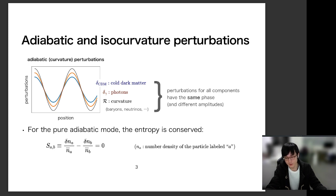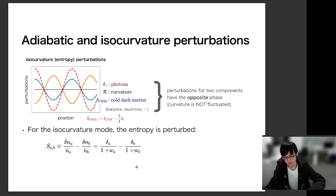So the total energy density is also fluctuating. And through the Einstein equations, the curvature is also fluctuating like this black line. And for the pure adiabatic mode, entropy is conserved. And the ratio of number densities for different species is constant everywhere.